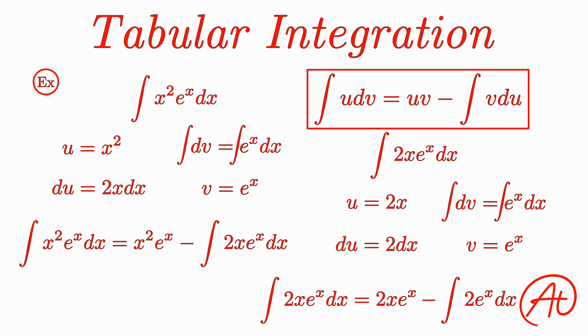This time, we can directly integrate this last integral into just 2 times e to the x. Finally, we can substitute this second integration by parts result into our original integration by parts result to find that the overall integral of x squared times e to the x is equal to x squared times e to the x minus 2x times e to the x minus 2 times e to the x.